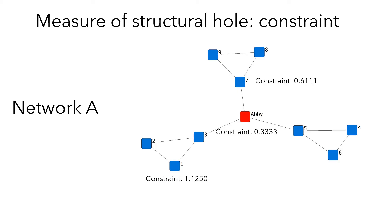How to achieve a low constraint value? You position yourself as a bridge among different clusters. This requires you to not just calculate how many ties — that is how many friends — you have in your social network. To fill a structural hole, you must pay attention to how your friends are connected as well. In other words, you must have a good understanding of your friends' social networks. You need to know the social networks of node 3, 5, and 7.